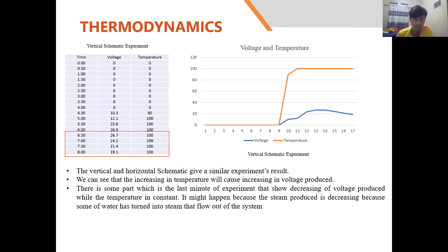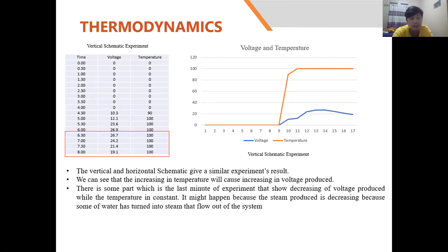For thermodynamics, the data from the vertical scheme experiment is presented, along with a graph. Both vertical and horizontal schemes give similar experimental results. It is observed that increasing temperature causes increasing voltage produced. However, in the last minutes of the experiment, voltage decreased while temperature remained constant, likely because the steam produced decreased as some water was expelled as steam flowing out of the system.